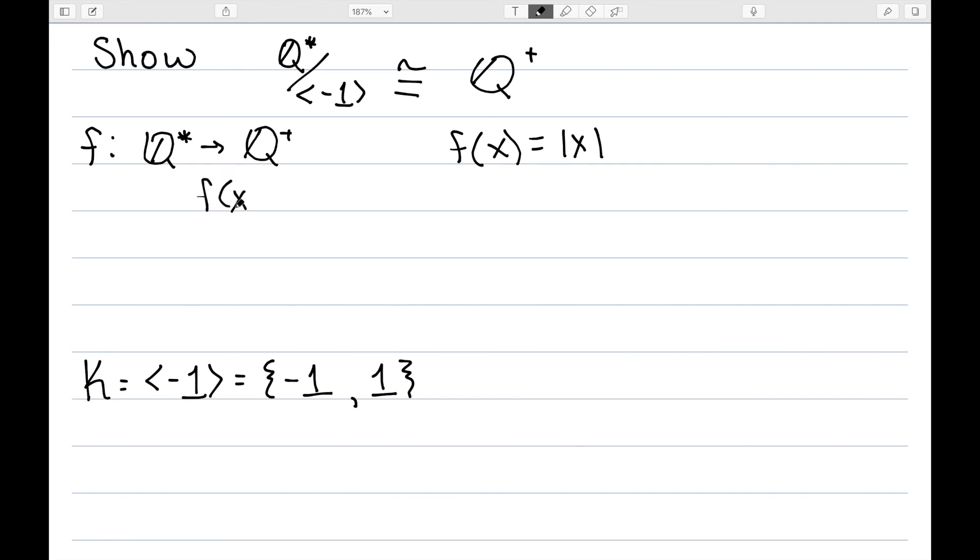We also need to show it's a homomorphism. So F of (X, Y) is the absolute value of XY. This is the same as the absolute value of X times the absolute value of Y. So that's the same thing as F(X) F(Y). So it is a homomorphism.